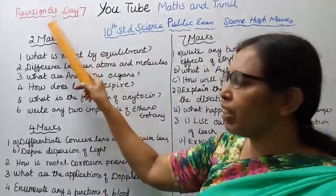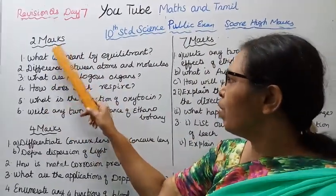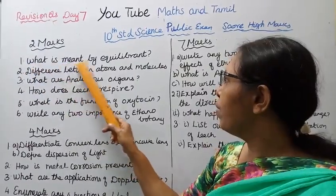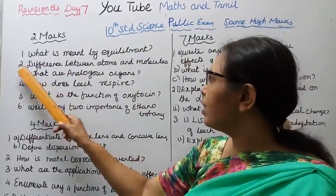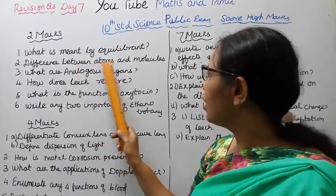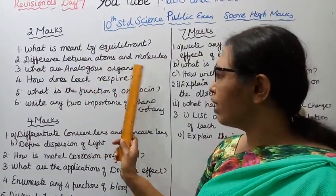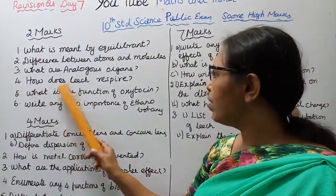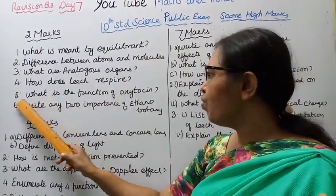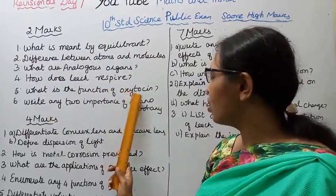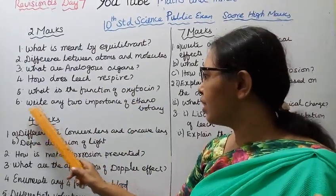Day seven revision questions. Two marks: First, what is meant by equilibrium? Second, difference between atoms and molecules. Third, what are analogous organs? Fourth, how does leech respire? Fifth, what is the function of oxytocin?